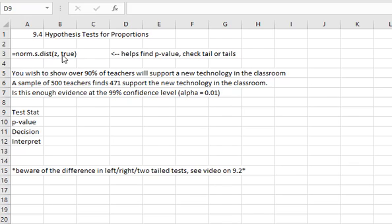That command is the same command that we used in 9.2 when we were working with means when we know the population standard deviation. And just like in that video, we may have to adjust for a left-tailed test, a right-tailed test doing one minus, or a two-tailed test where we have to find the tail and then multiply it by two. Check the video on 9.2 to see how to do that.